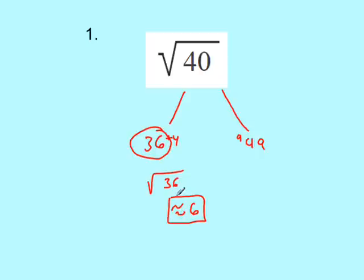The square root of 40, we say, is about 6. It's going to be 6 point something. But it's not going to be 7 because it's smaller than the 49 here. So let's look at the second one.